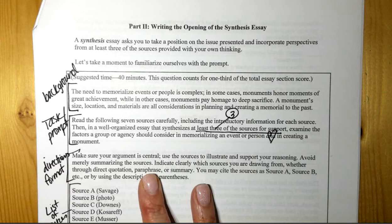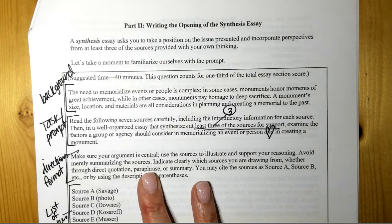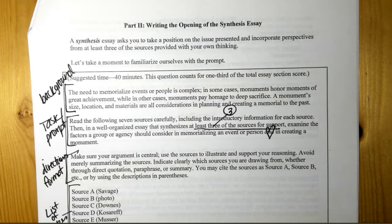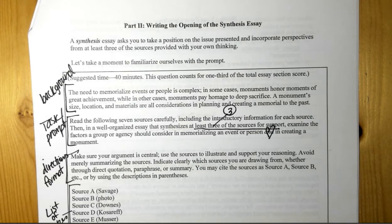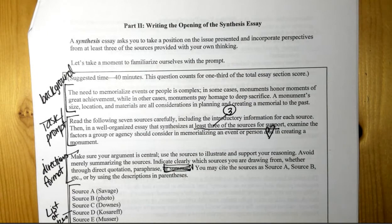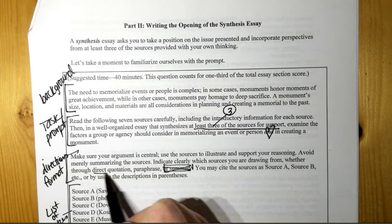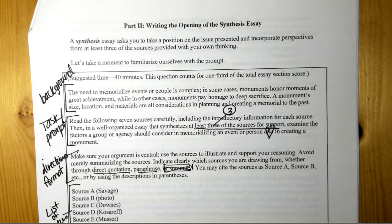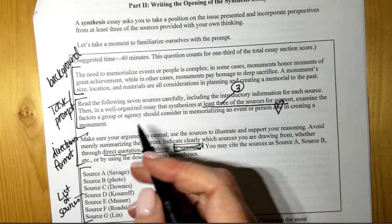Make sure your argument is central. Use the sources to illustrate and support your reasoning. Avoid merely summarizing the sources. Indicate clearly which sources you are drawing from, whether through direct quotation, paraphrase, or summary. I would rather you not have summary. Direct quotation is your strongest. Paraphrase as long as you do it well. You may cite the sources as source A, B, etc., or by using the description in parentheses. So this is MLA, right?